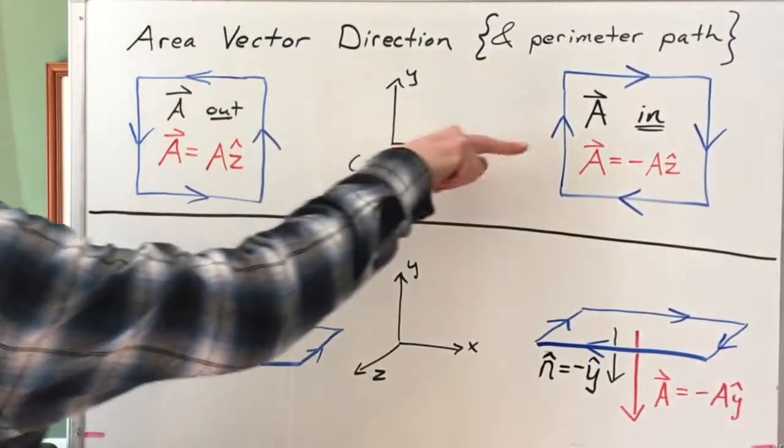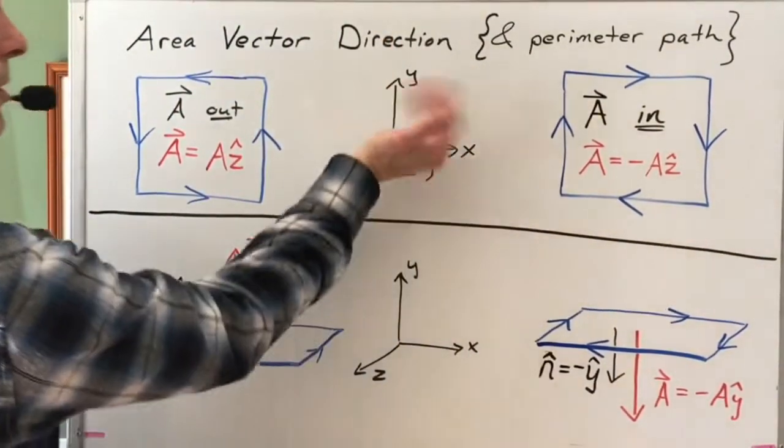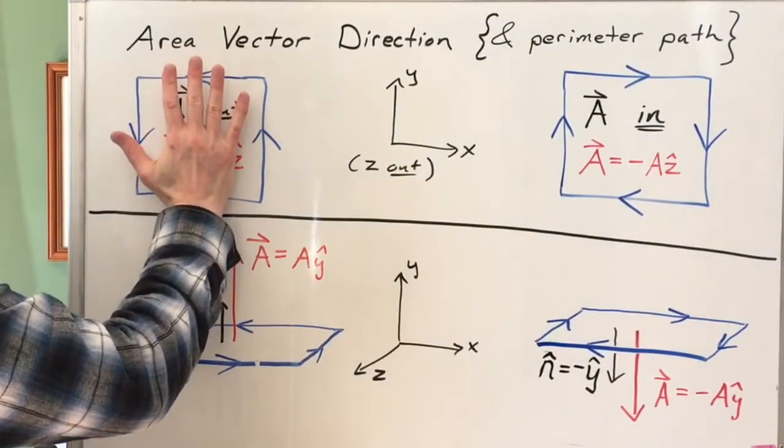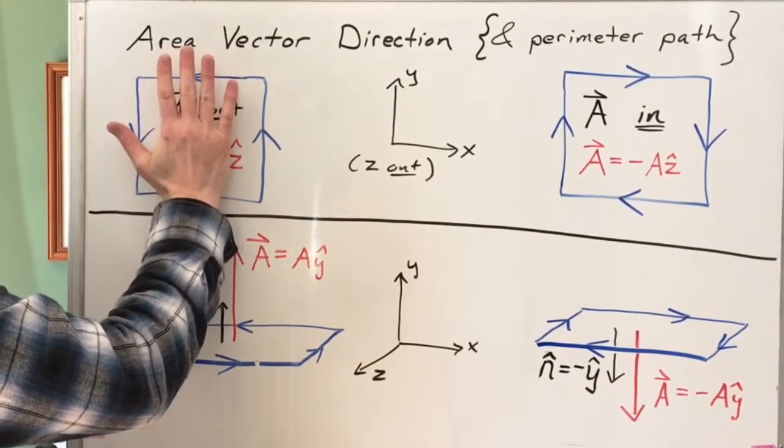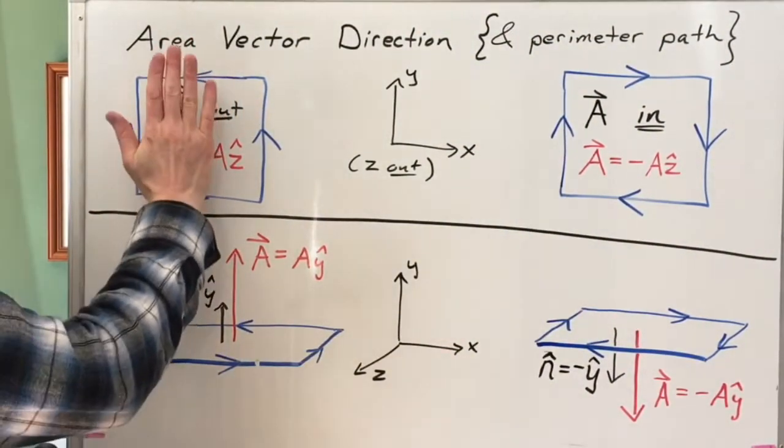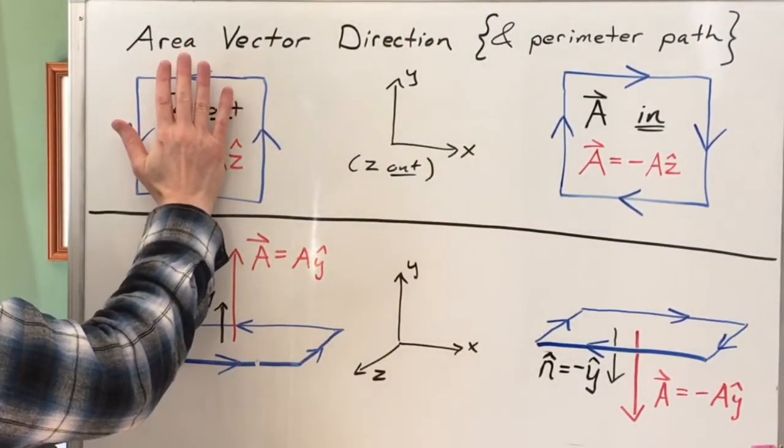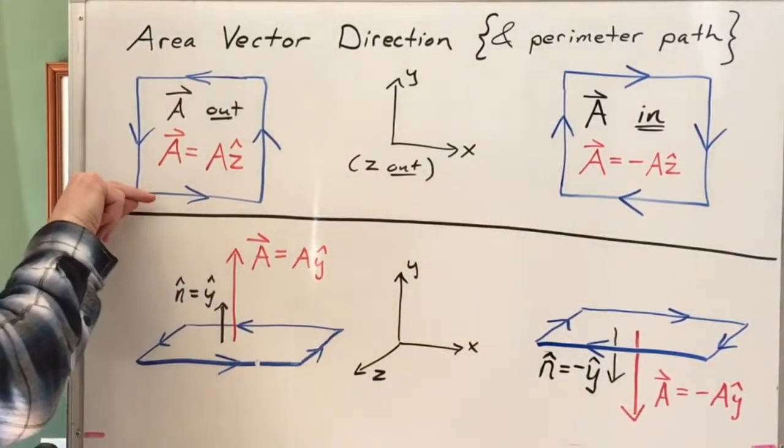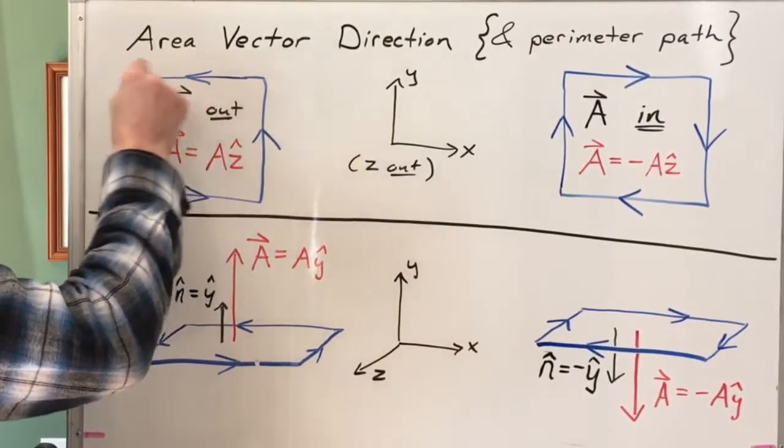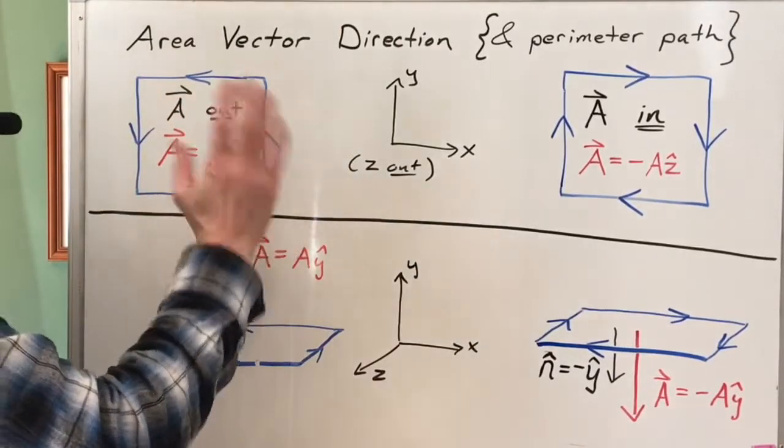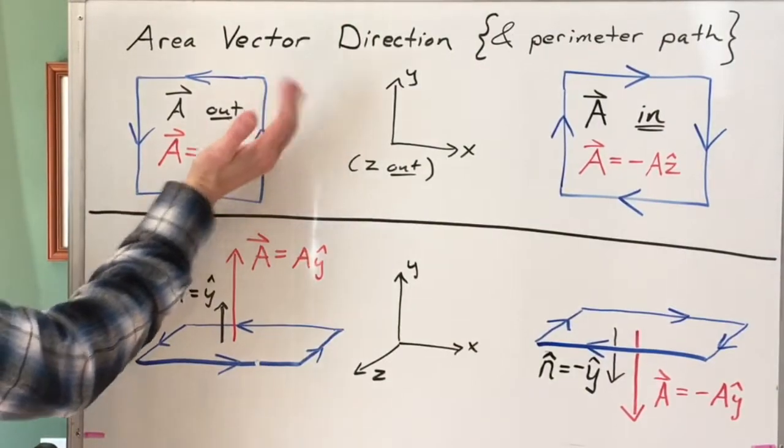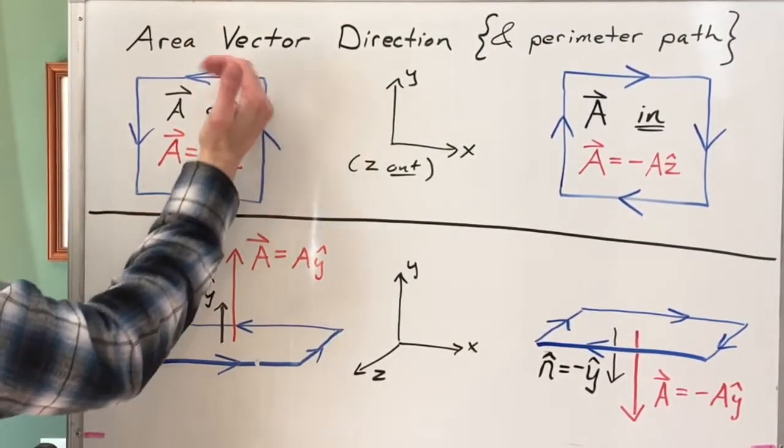So imagine I've got an X, Y, Z coordinate system, right-handed coordinate system. Imagine I have an area that the plane of the area is oriented in the X, Y plane. So the Z axis is perpendicular to the plane of the area. If I go around the perimeter this way, if I call this my positive pathway around the perimeter,